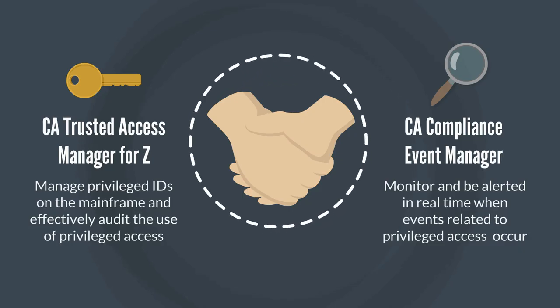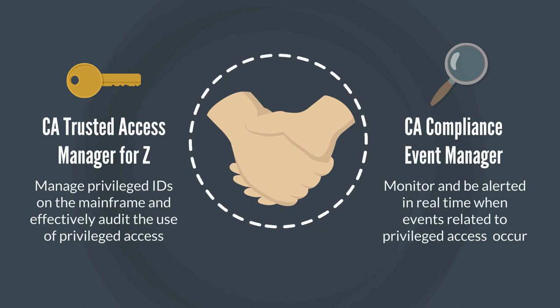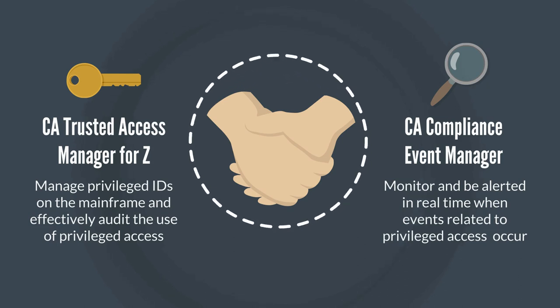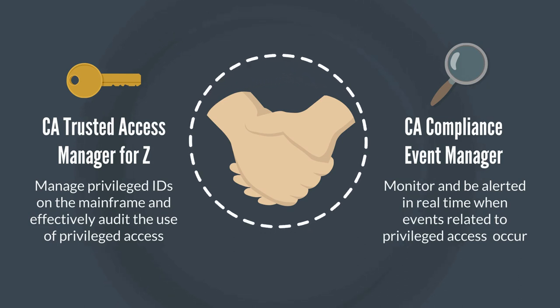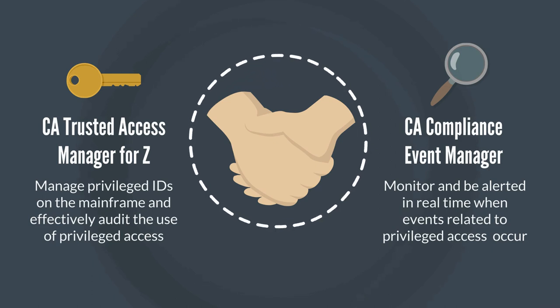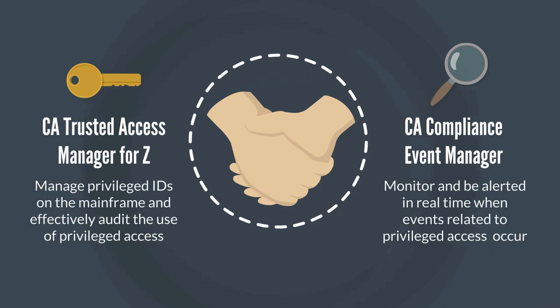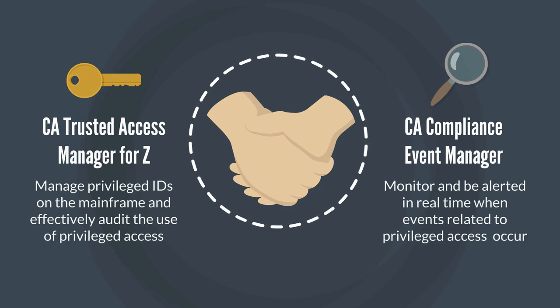Using CA Trusted Access Manager for Z, you can manage and audit privileged IDs on the mainframe, strengthening privileged ID security by letting you restrict who has access to a privileged state and timebox the elevation, greatly reducing the risk of insider threats.